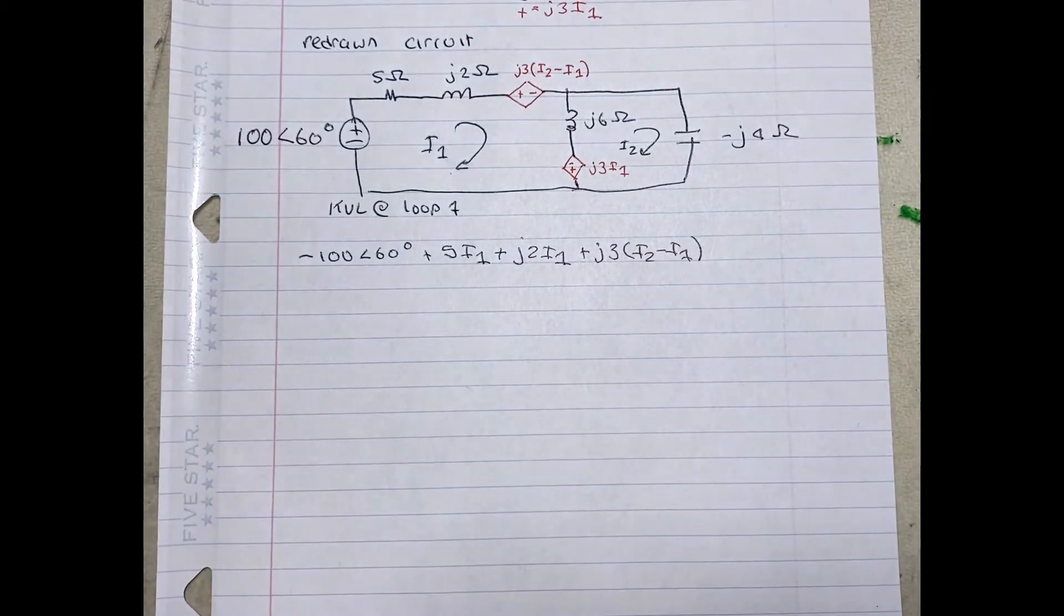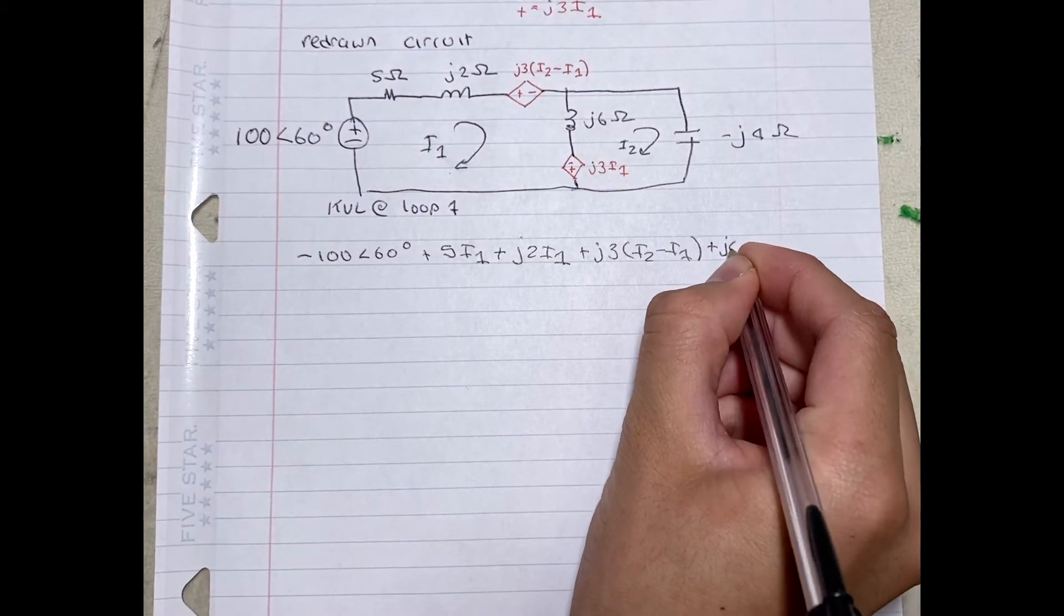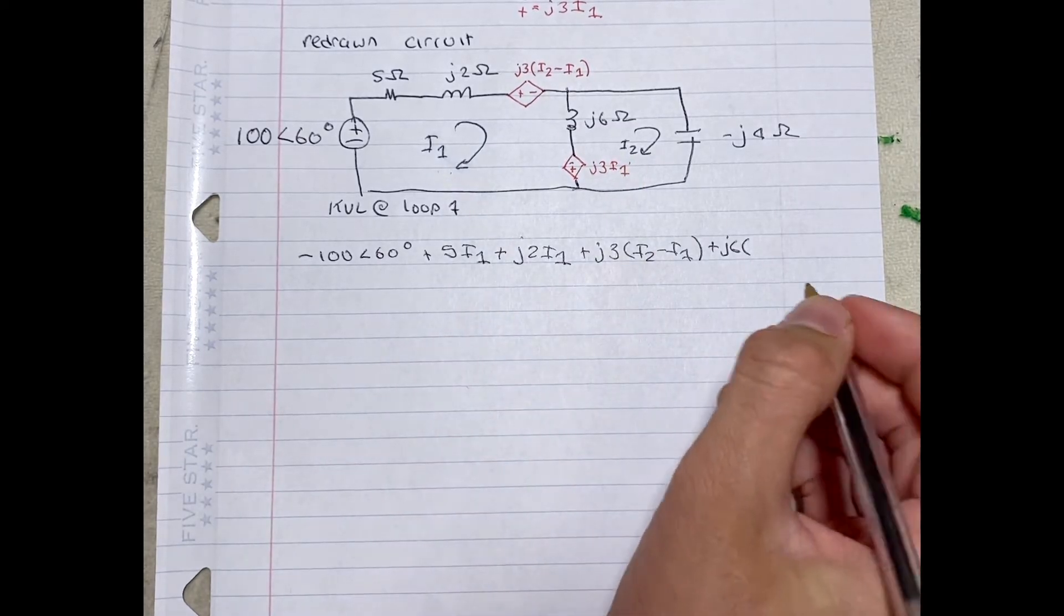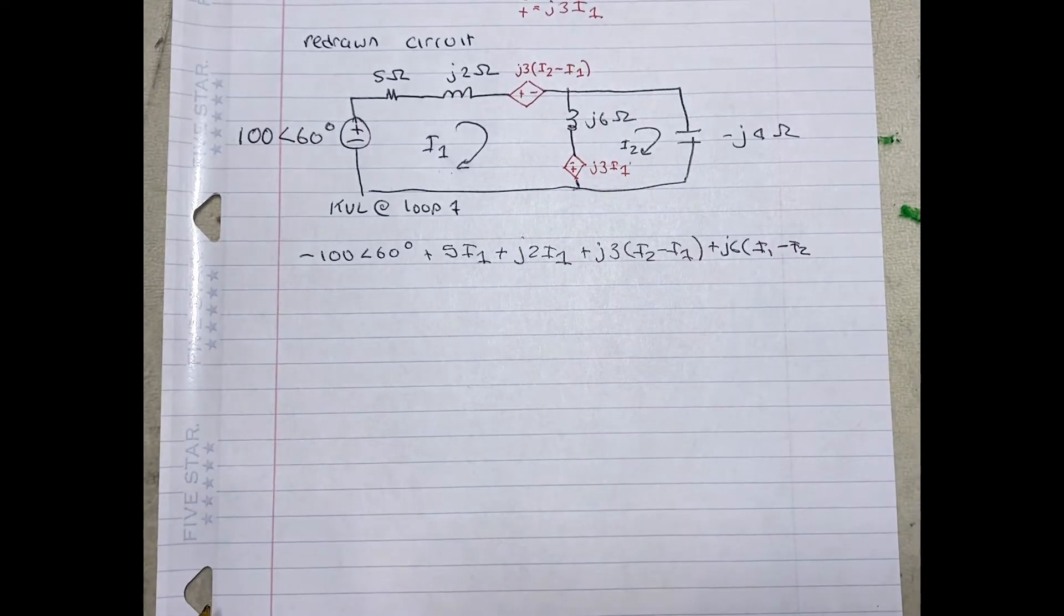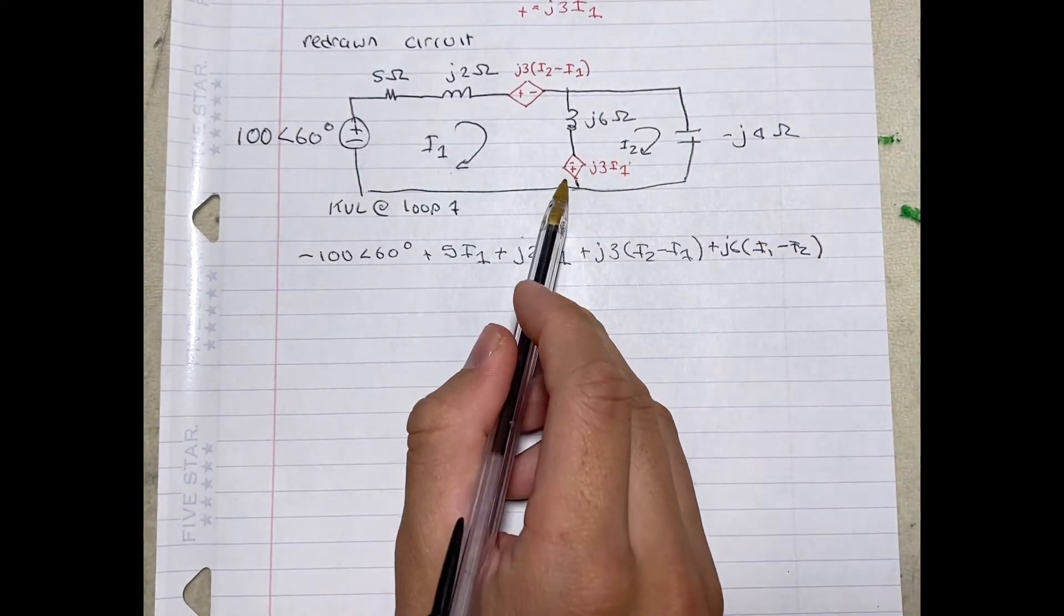Plus J6 of I1 minus I2. And then finally, minus J3 of I1.